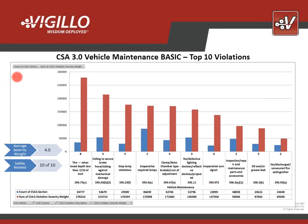Now let's look at the details behind maintenance in the 3.0 world. We've taken hundreds of cargo violations out of the cargo basic and dropped them into the vast ocean of vehicle maintenance. You look at this and say, well, those numbers look about the same — average severity weight of 4, ten out of ten safety related. What happened? If you took this slide and held it next to the previous one, they are identical — exactly the same top ten violations. The frequency of the cargo violations is so small relative to the frequency of all these maintenance violations that they have simply dissolved in the vast ocean of vehicle maintenance, never to be seen again.